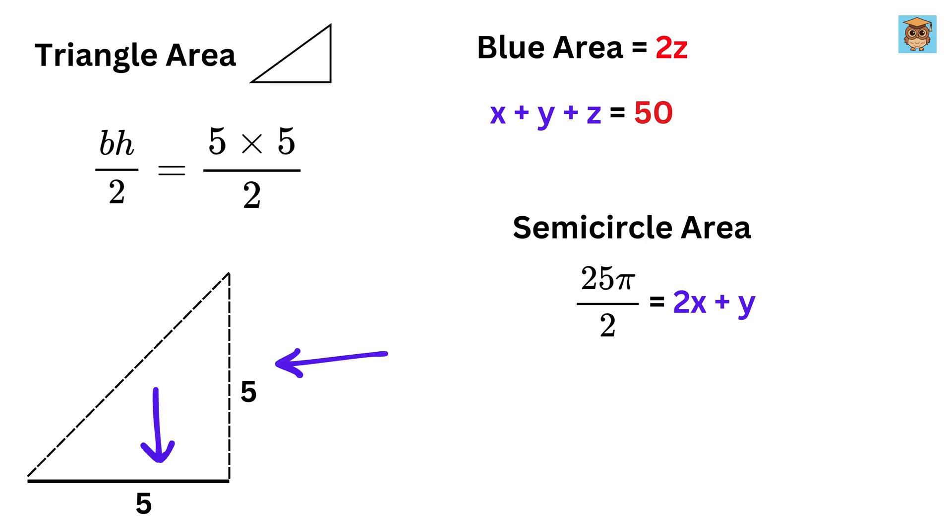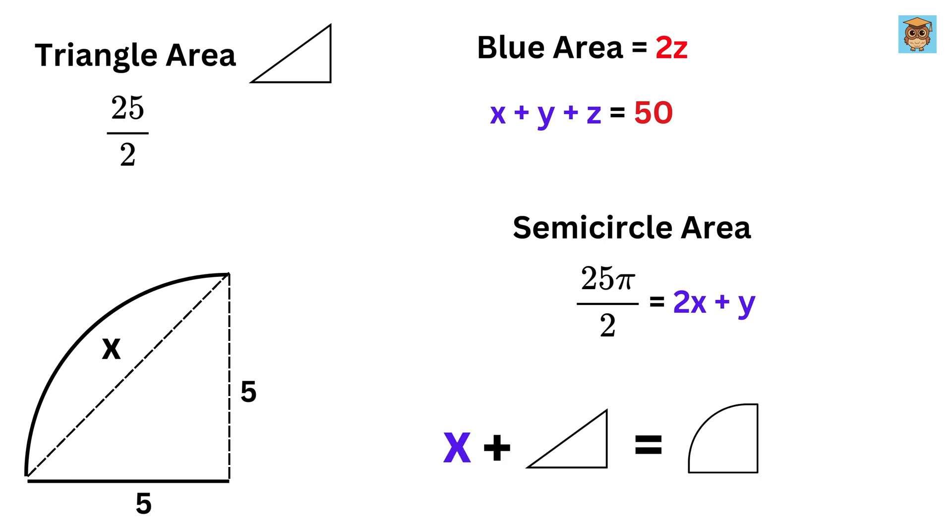Here, both the base and height are 5, so the triangle's area is 25 over 2. It is also crystal clear that x plus this triangle's area equals the area of this small quarter circle. So, we subtract this triangle's area from both sides to get the value of x.